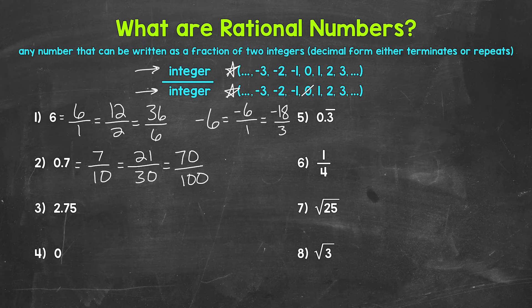Just like we talked about with number one, a negative — so negative 0.7 — is rational as well. We can write this as negative 7 over 10. So any terminating decimals are going to be rational.